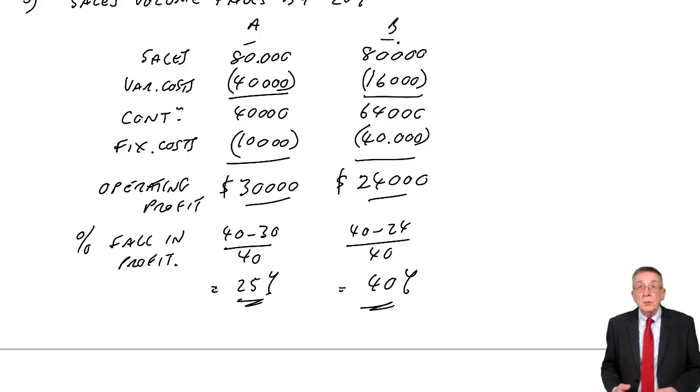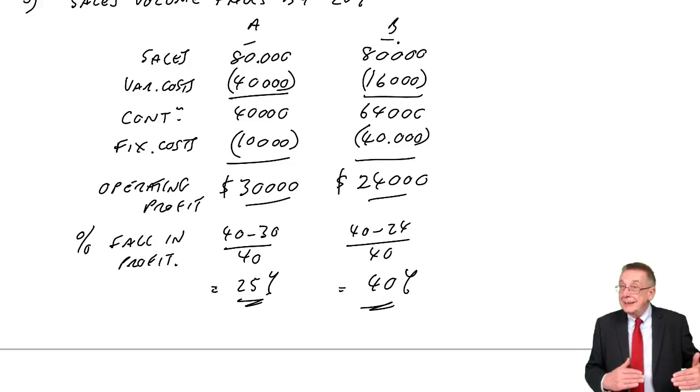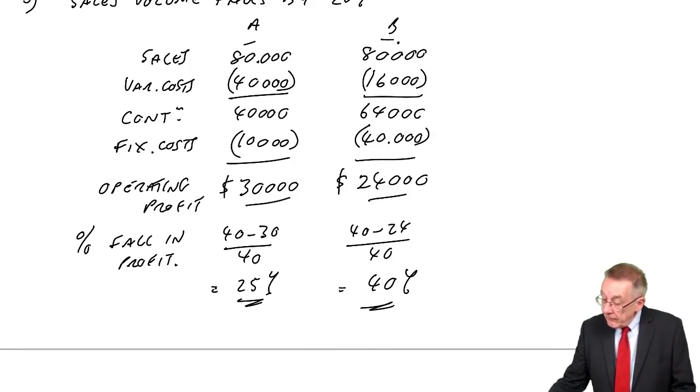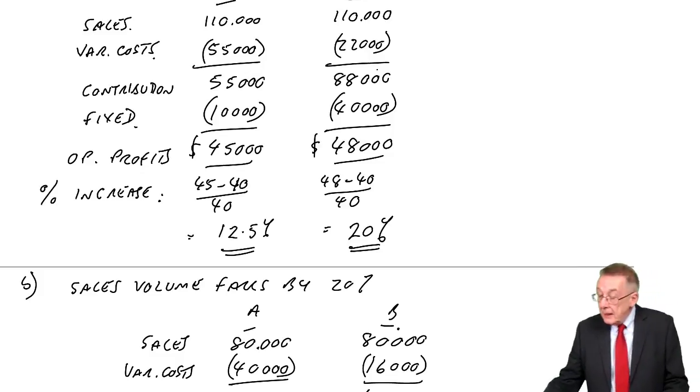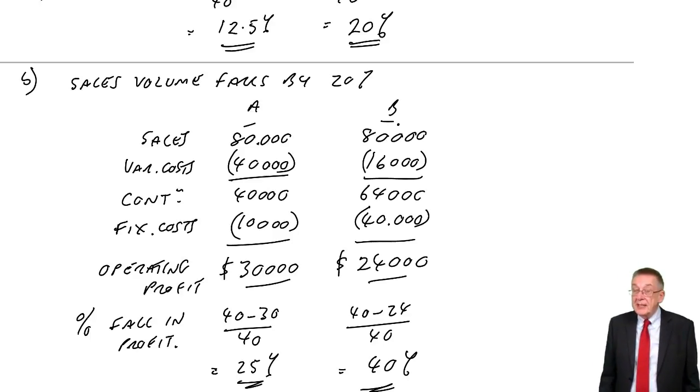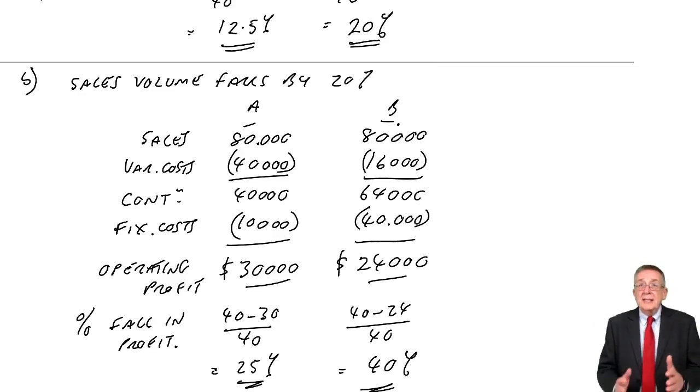But as you can see from this illustration, make up other figures yourself by all means, but as the sales volume goes up and down, profits go up and down. But the more the fixed costs are, the more the fluctuations in profits will be. Profits in B, B has higher fixed costs. So when sales went up, profits in B went up more than in A because of the fixed costs. But it works both ways. When sales fall, profits in B go down more than they did in A, again because of the fixed costs. So fixed costs in all cases create more risk.